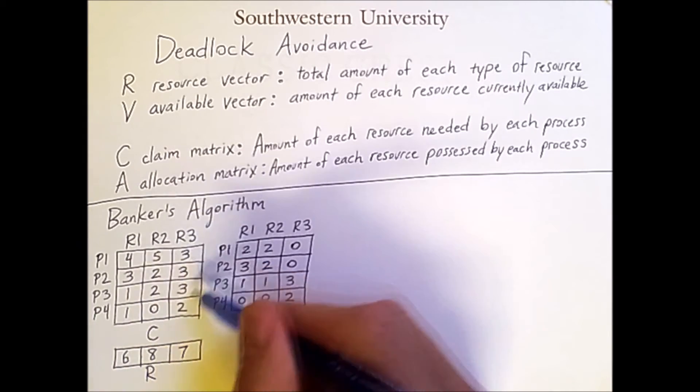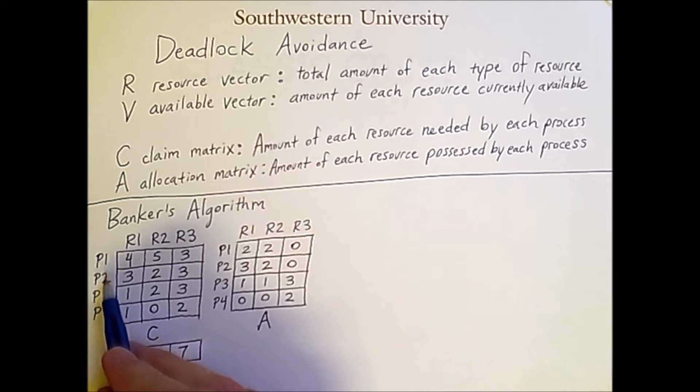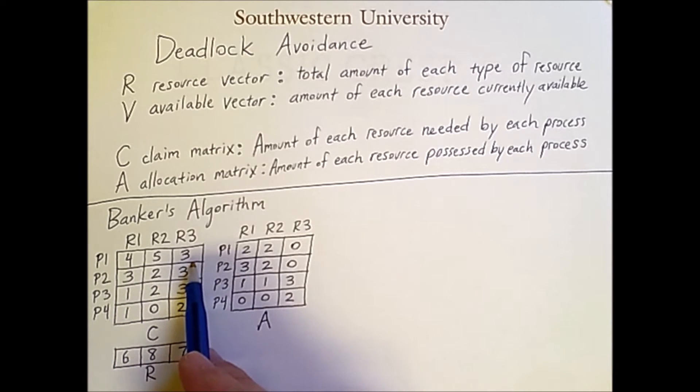Now, this is the claim matrix C, and here are four processes. So when these processes entered the system, they had to state to the system in advance, this is the total number of each of these resource types that I need to hold in order to complete my computation.